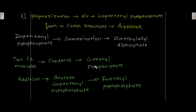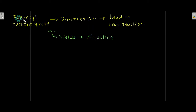Geranyl pyrophosphate is produced when two C5 molecules undergo condensation. Farnesyl pyrophosphate then undergoes a dimerization (head-to-head) reaction, and this yields squalene.